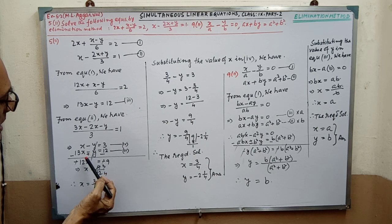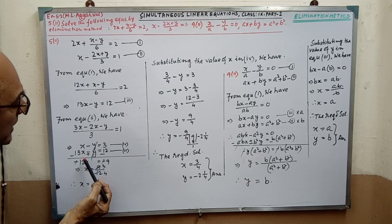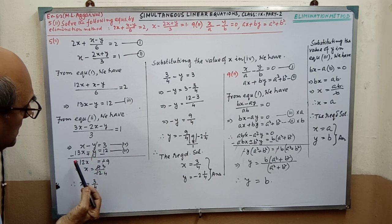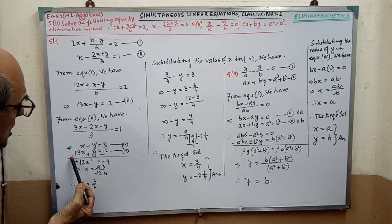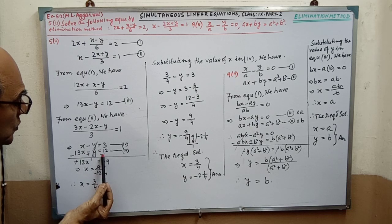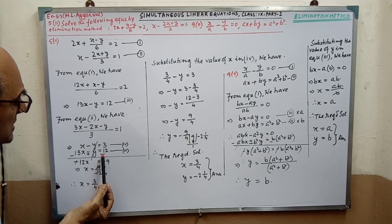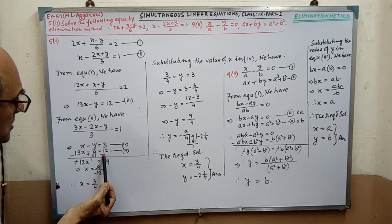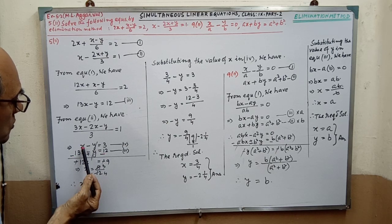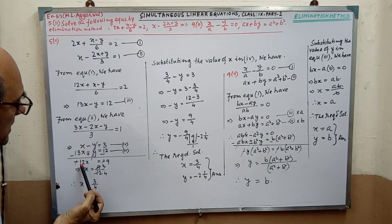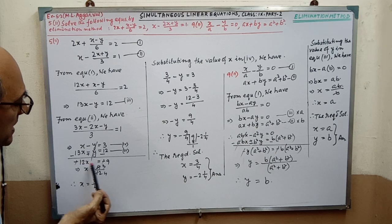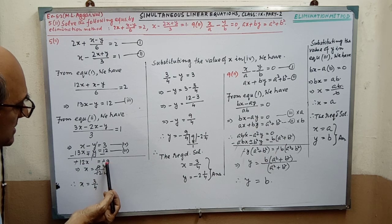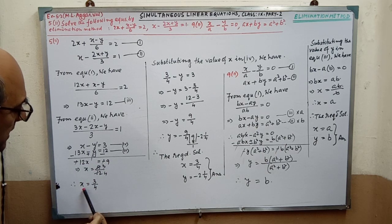When you are subtracting, then each term you have to change the sign. After changing the sign, what sign we are getting, that we have to consider. After that, we are getting minus 12x equal to minus 9. Then simplifying, we are getting x equal to 3 by 4.